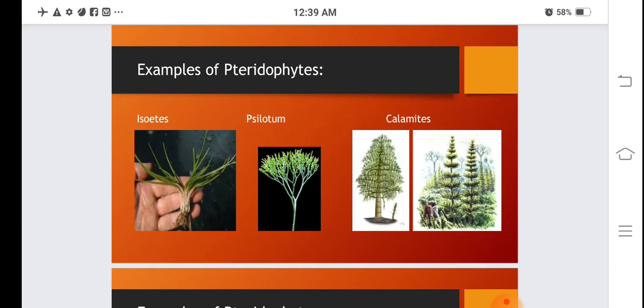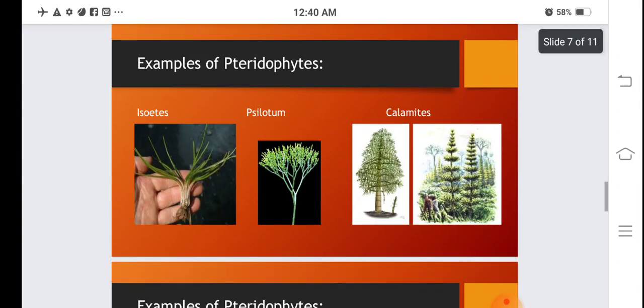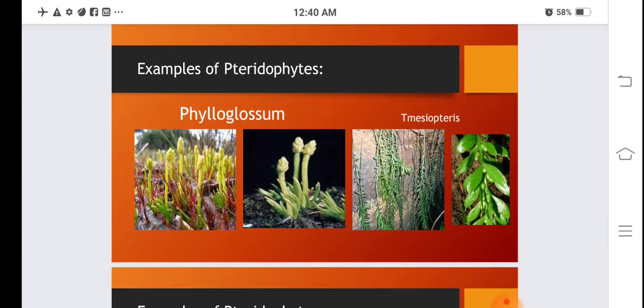Calamites are large extinct tree-like family members. These are larger tree-like plants which belong to Sphenopsida. Psilotum and Mesopteris are also examples of pteridophytes you can see in their images.